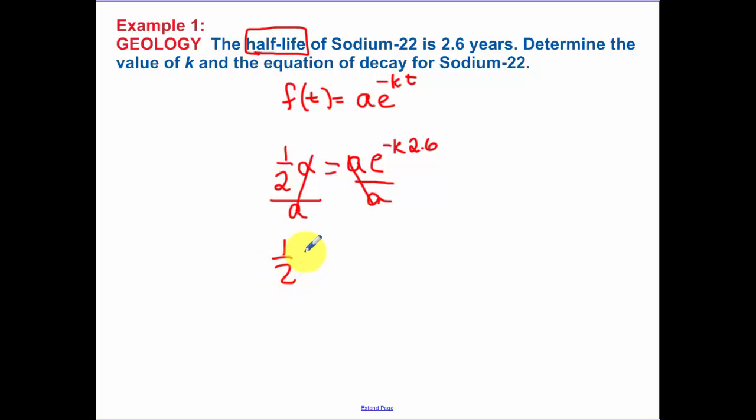So I end up with one half equals e to the negative 2.6k. I need to solve for k, so we do our natural logarithm of one half is equal to negative 2.6k, dividing by negative 2.6, and using my calculator, 0.267. So that's what my k is. So my equation now, as a function of time, is that.